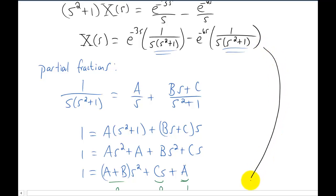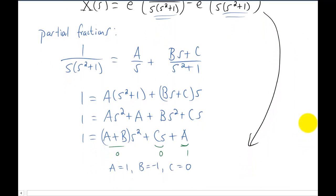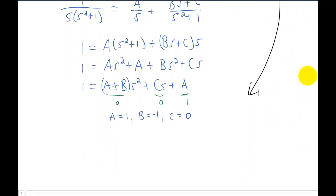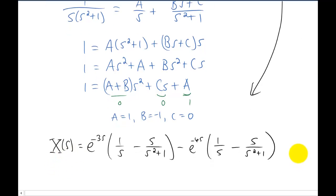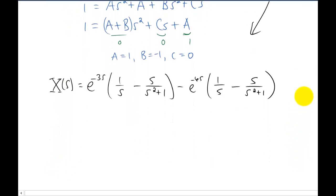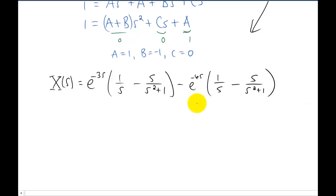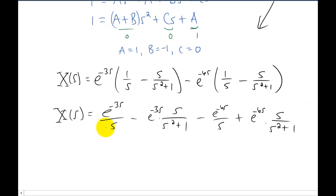So let's take the Laplace transform of our solution, that capital X of S, and let's rewrite it down here. Now this is what capital X of S looks like. And I am going to distribute through my exponentials just so that we have four terms that we can deal with separately. So now we have four terms and we can take the inverse transform of each one of these terms to get our final solution.